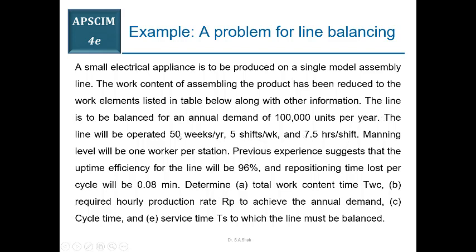Normally 50 or 52 working weeks per year is standard. If not given in the problem, you can take either 50 or 52. Manning level will be one worker per station. So if the total number of workers is 5, this means you will have 5 workstations. So when you find the total number of workers, that will also be your desired number of workstations. M is equal to 1 in this case.